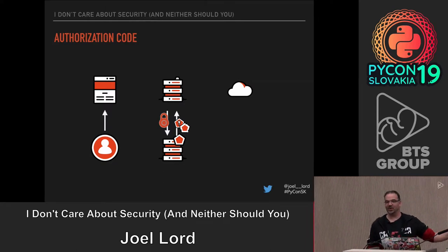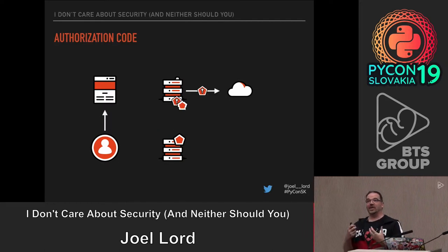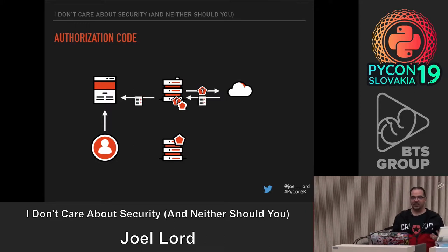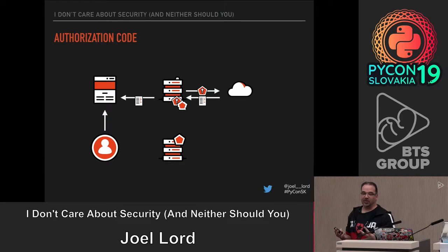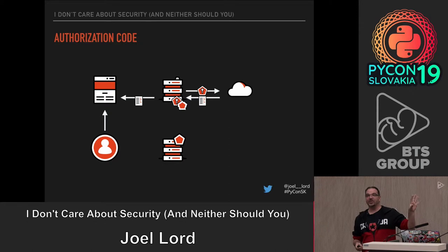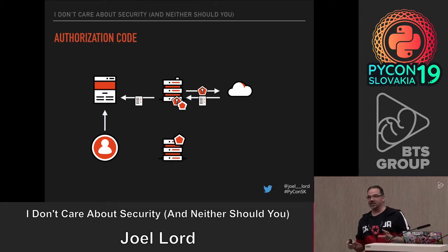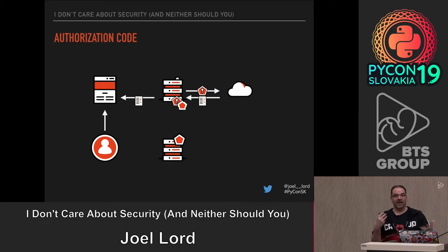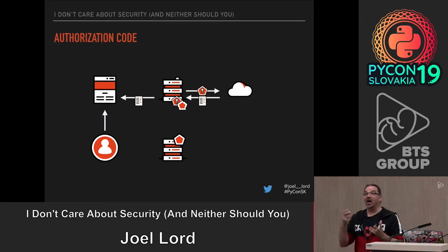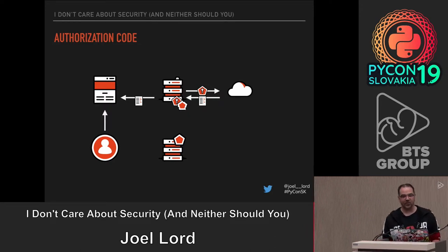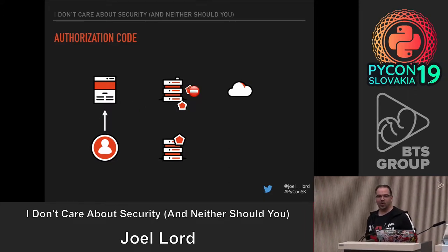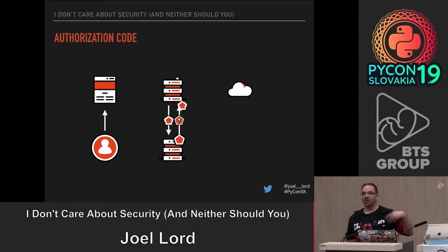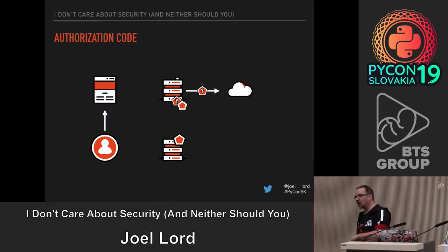The server exchanges that access code for an access token as well as a refresh token. That access token is your key to the API — it gives access to the resources. What's really important here is that your browser or front-end application never actually had access to a user's credentials, never had access to a token, never had access to anything related to the keys to your API. Access tokens expire, which is why we also send a refresh token — so the server can use it to get new access tokens.